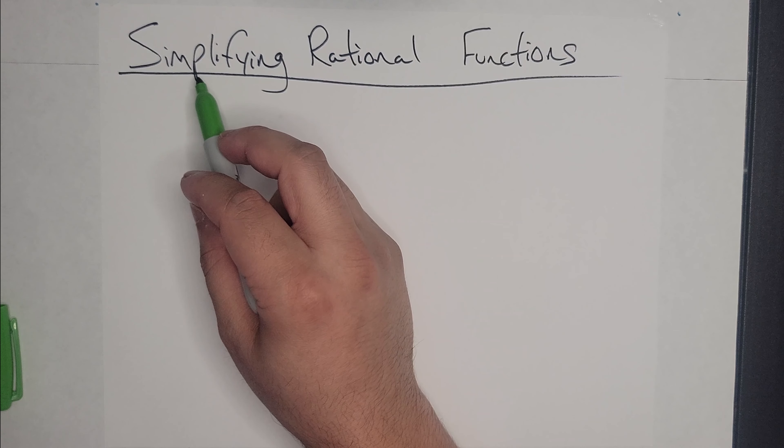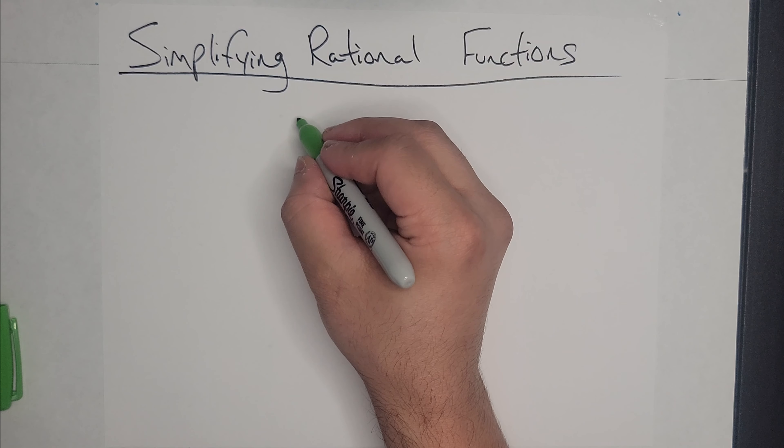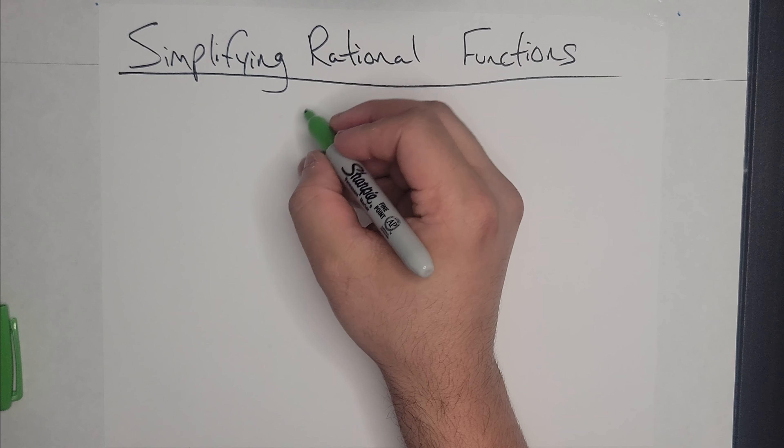Okay, so in this video we're going to be simplifying rational functions. Let's start with the function f(x) = (3x³ - 3x²)/(8n² - 12n² + 4n). We are going to simplify it.